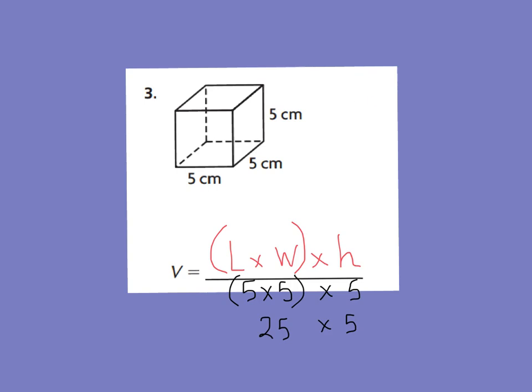We're going to have 25 times 5. We all know 5 times 5 ones is 25 ones. Regroup my tens. 5 times 2 tens is 10 tens, plus 2 more tens is 12 tens. Therefore, you should have 125. And remember, we are measuring these in cubic centimeters.